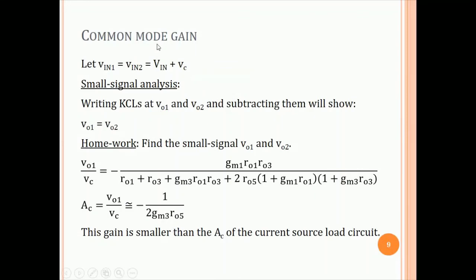Let's find the common mode gain. For common mode gain, we say Vin1 equal to Vin2 equal to some DC plus the same AC applied to both the inputs. Now, if you do a small signal analysis, and I am not doing it, I am leaving it to you as homework. If you just draw the small signal circuits and write KCLs at VO1 and VO2, and you subtract them, you will find that VO1 is actually equal to VO2, which is interesting. So, in the common mode, the output voltages are equal, even though the loads are different at VO1 and VO2. It just so happens.